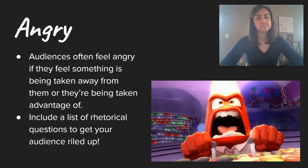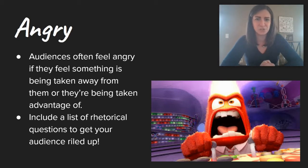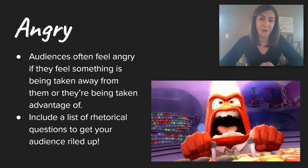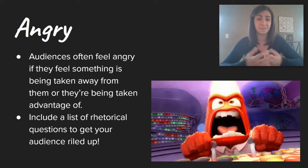Let's start with anger! An easy way to make your audience feel angry is to help them feel like something's being taken away from them, or that they're being taken advantage of. Patrick Henry did this in his speech, Give Me Liberty or Give Me Death, that he delivered to a group of colonists in 1775. He wanted them to be angry, and that would motivate them to break away from England during the American Revolution. What he did was include a list of rhetorical questions that got his audience thinking and riled them up, getting them angrier and angrier.